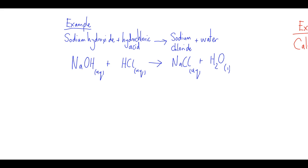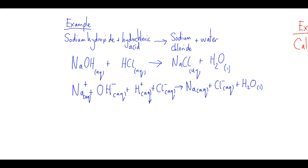The next step is to split all the AQ species into their individual ions. This leaves us with a sodium ion, a hydroxide ion, a hydrogen ion, and a chloride ion on the left-hand side, and a sodium ion and a chloride ion on the right-hand side. H₂O liquid remains unchanged because it's not AQ — we leave that one alone. This is called the full or complete ionic equation.